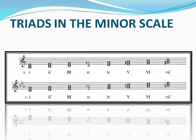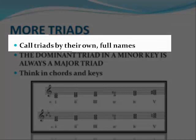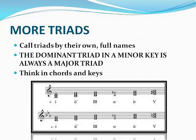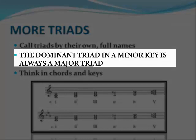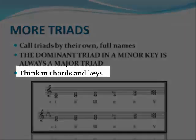It's the same in A minor and in C minor. Here's what the A minor scale sounds like. And here's what C minor sounds like. Let's just go over some basic rules when you're working with triads. Always call triads by their own full name — for example, the C major triad or the A minor triad. Remember, the dominant triad in minor keys is always a major triad because the leading note must always be raised in a minor key. That leading note is the 3rd of the dominant triad.